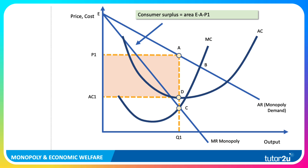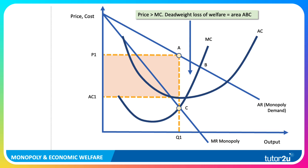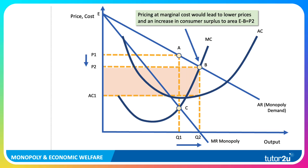Although there is still some consumer surplus equal to the area E, A, P1, there's a deadweight welfare loss equal to the area A, B, C because price is well above marginal cost. If a firm were to charge a lower price at P2, for example, that would lead to lower prices for consumers, an expansion along the demand curve from Q1 to Q2, and an increase in consumer surplus. The area of consumer surplus would increase to E, B, P2.